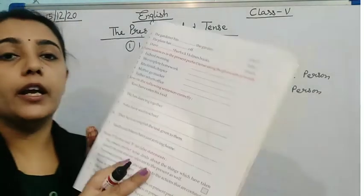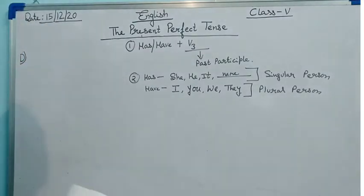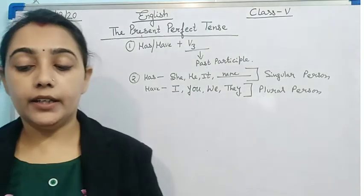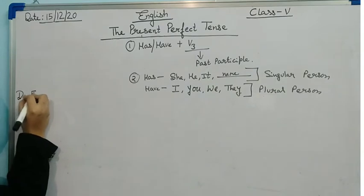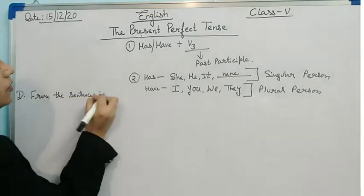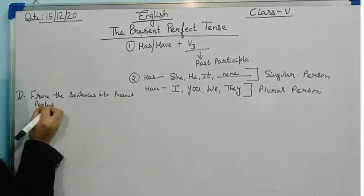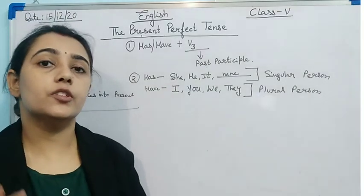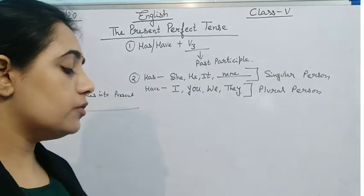Open your book, everyone — page number 65. Exercise D: Frame the sentences in the present perfect tense using the given sets of words. Now you all remember what is present perfect tense. Present perfect tense means the action which has already been done in the past but showing its effect in the present. Now let's do the exercise.